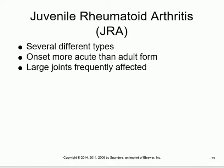Juvenile RA: the important unique feature is that the RA factor is absent. In adults with RA, a blood sample shows the RA factor. In juvenile RA, it does not appear. So the two key points for juvenile RA are: younger age and absence of the RA factor. This makes it a distinct diagnostic category.